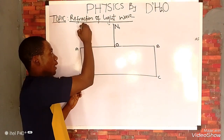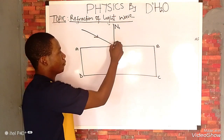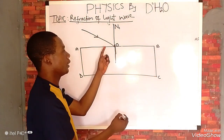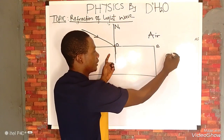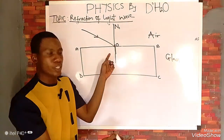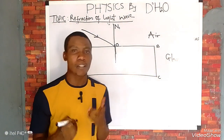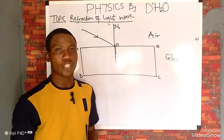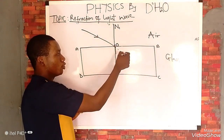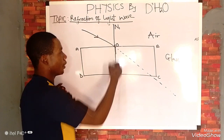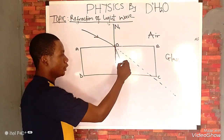A ray of light coming towards the glass is our incident ray. When an incident ray strikes a glass prism — remember, this is air and this is glass, and their densities are not the same — refraction is bound to occur. Refraction is a change in speed, direction, and wavelength. So the ray will not continue straight; instead it will bend. This bent ray is what we call the refracted ray.